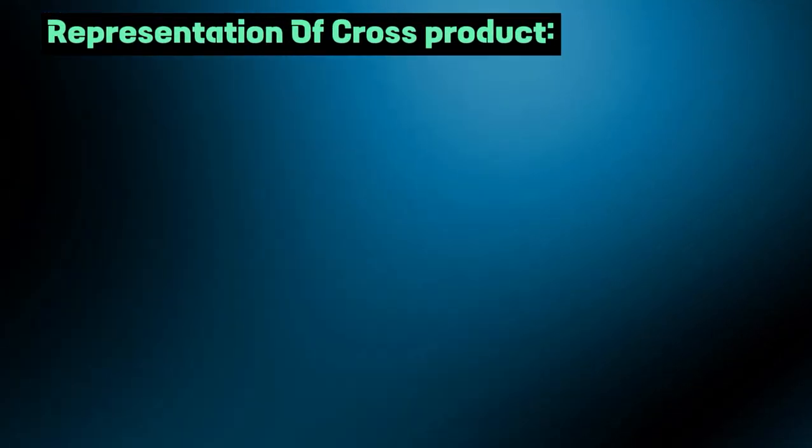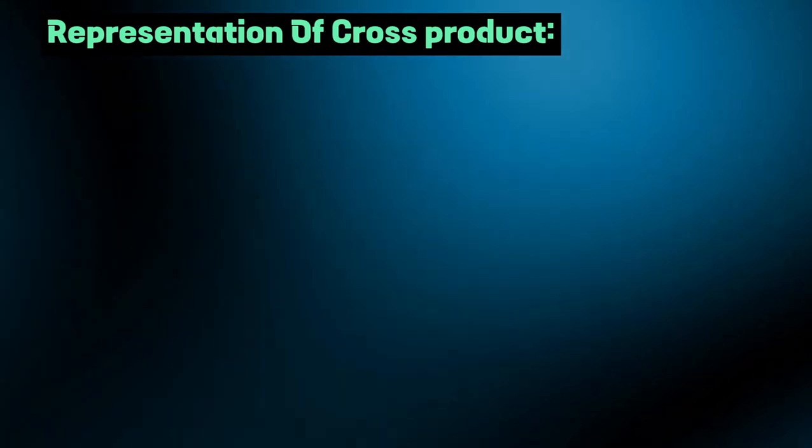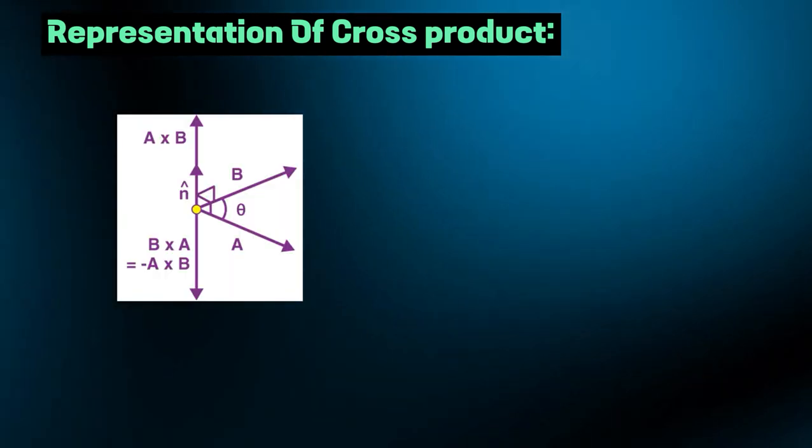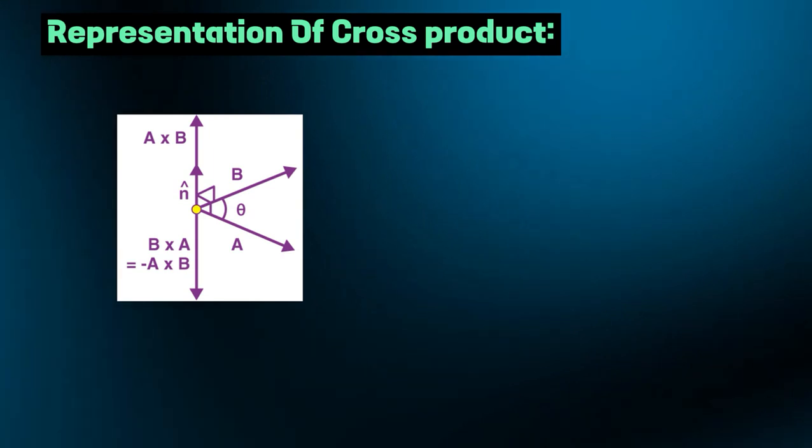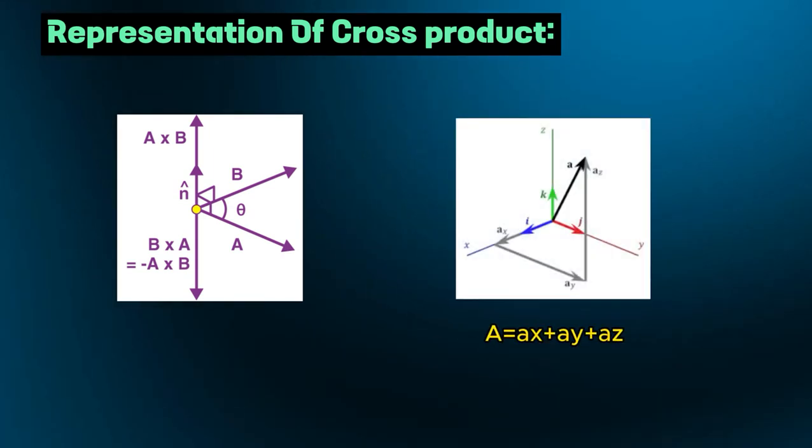Representation of cross product. Here we have two vectors a and b. The cross product is represented as a cross b. If vector a is in component form it is represented as